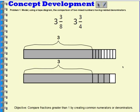So now we can compare these two tape diagrams to see which one has the greater amount shaded in. Well, 3 and 3 fourths has more shaded in than 3 and 3 eighths. So 3 and 3 eighths is less than 3 and 3 fourths.